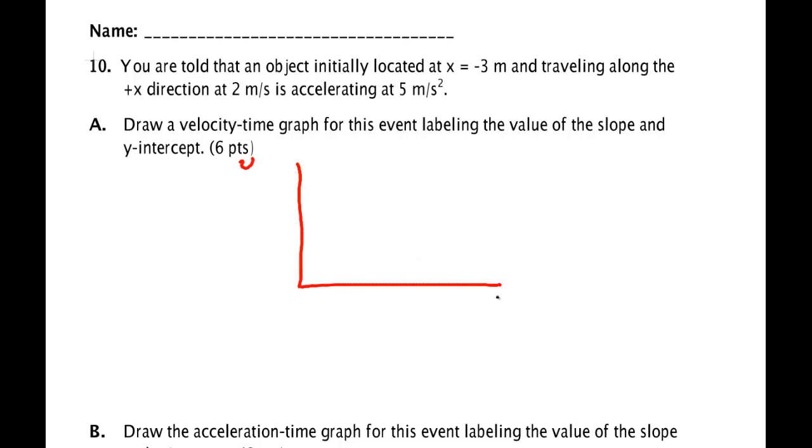So, V, T. It's initially located, that's not on here. Traveling along the X direction at 2 meters per second. So V X knot is 2 meters per second. Right there, 2 meters per second, I have a point.